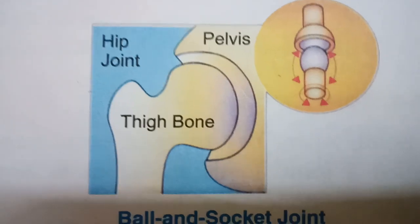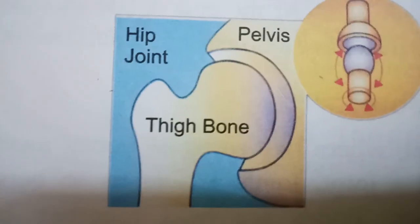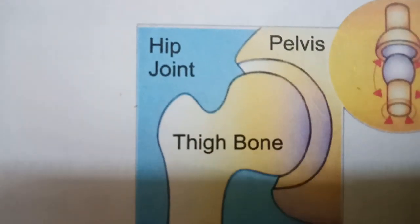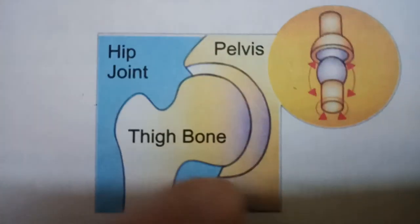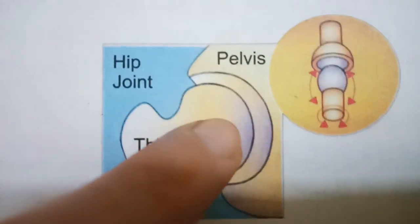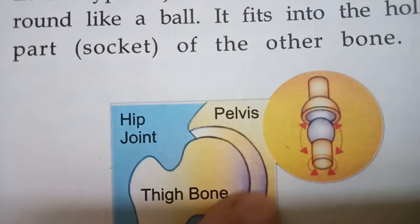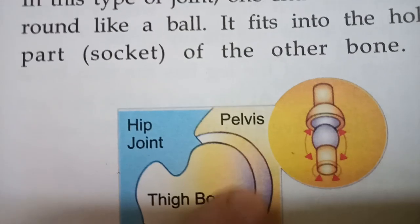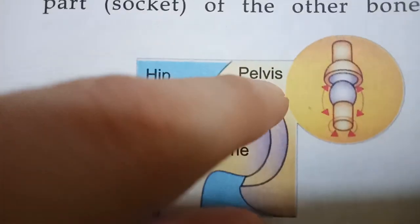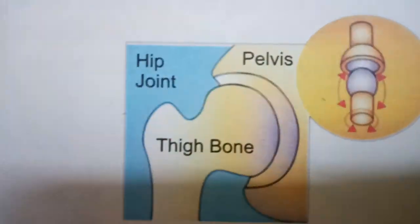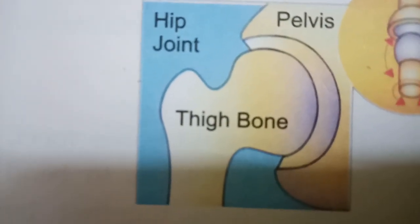Here is another example of the ball and socket joint, which is also present in your hip. The thigh bone is shaped like a ball and it fits into the hollow part — the socket — of the other bone.